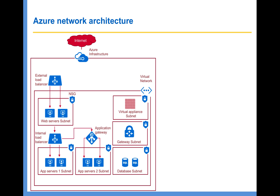One final thing is, if you want to control the traffic — for example, if you want to route all your outgoing internet traffic through a firewall — then you can define a user-defined route. By default, the system routes will enable all the Azure resources in a virtual network to talk to the internet. If you want to route all the outgoing internet traffic through a firewall, you can define that using a user-defined route.